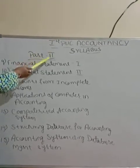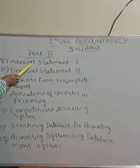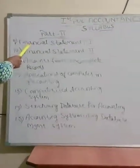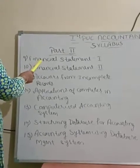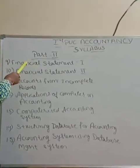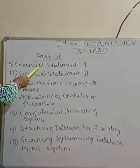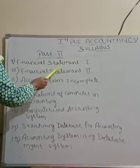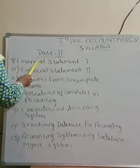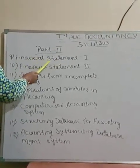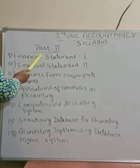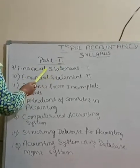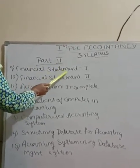We are going to discuss Chapter 9 — Financial Statement Part 1. Under this chapter we are going to study about stakeholders and their information requirements. Stakeholders require information, so for this purpose they are going to maintain a trading account, profit and loss account, and balance sheet. These financial statements are prepared without adjustment in order to give information to the stakeholders.